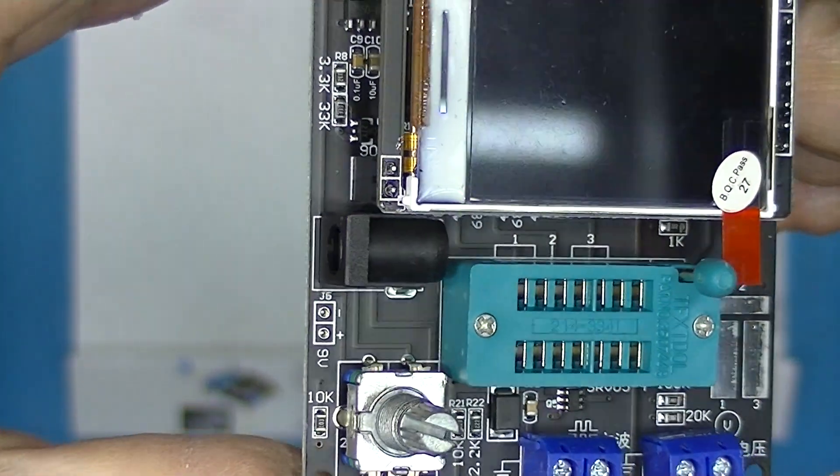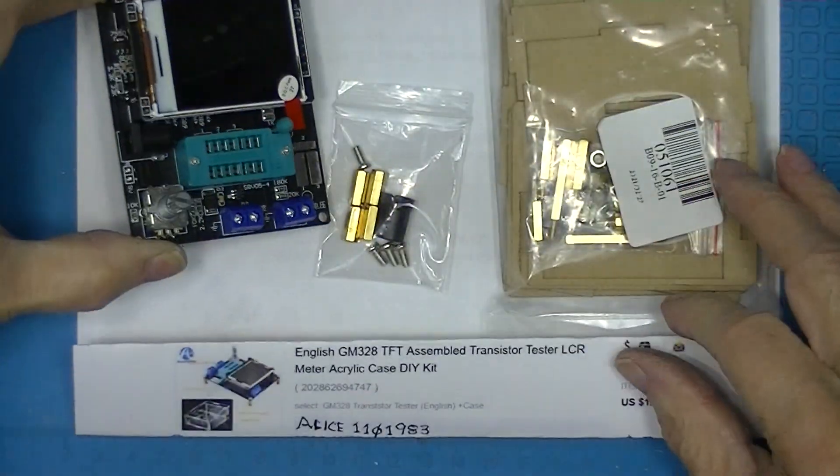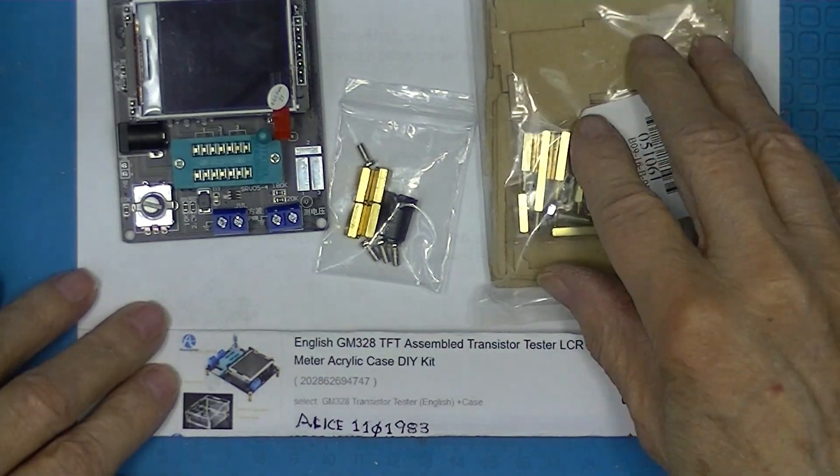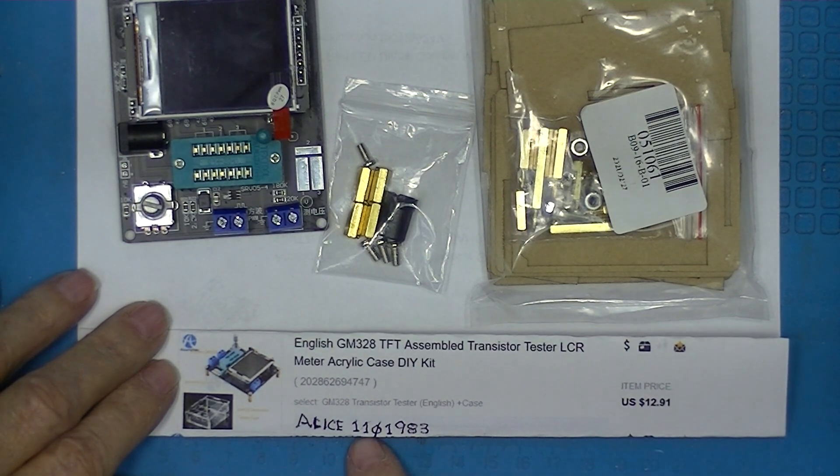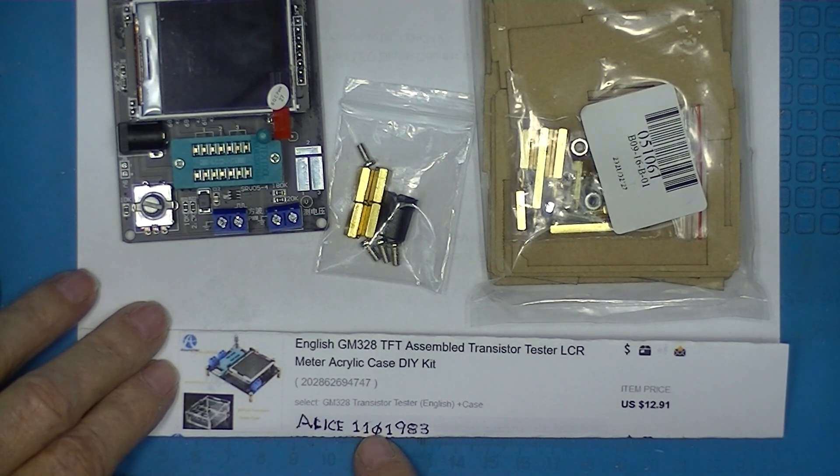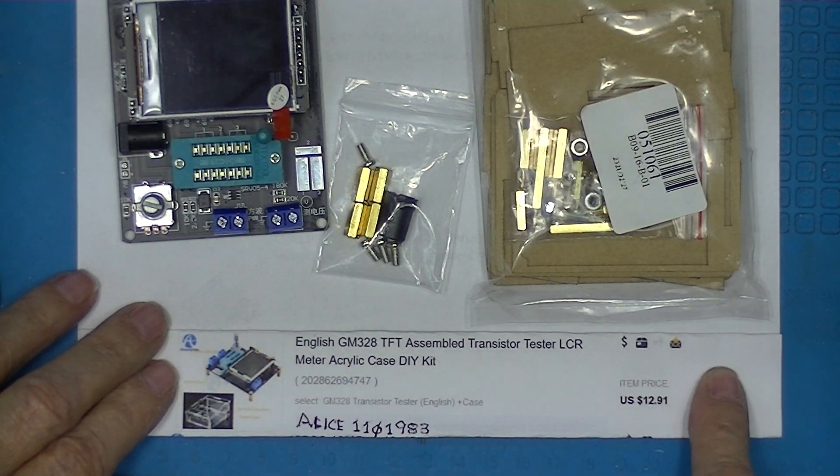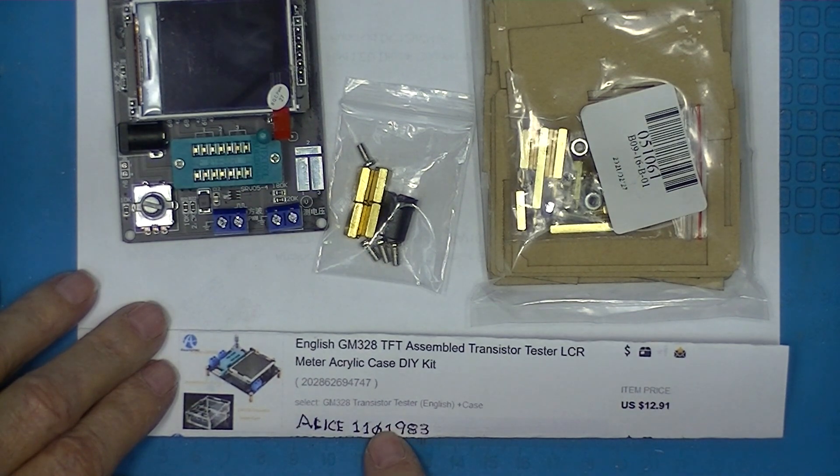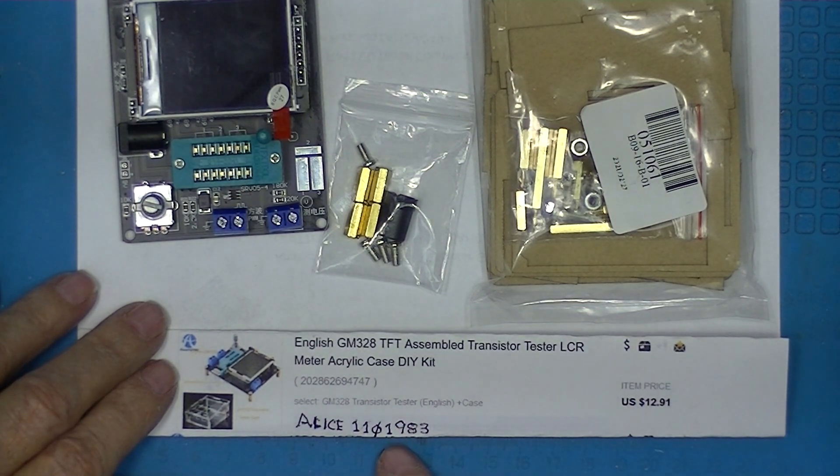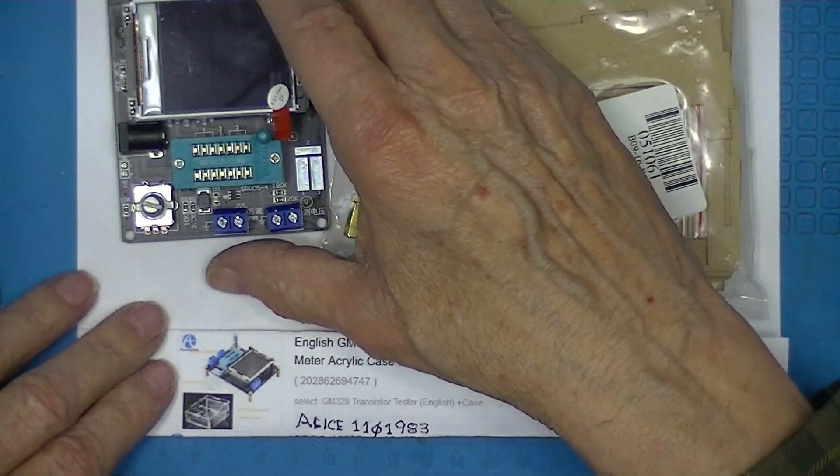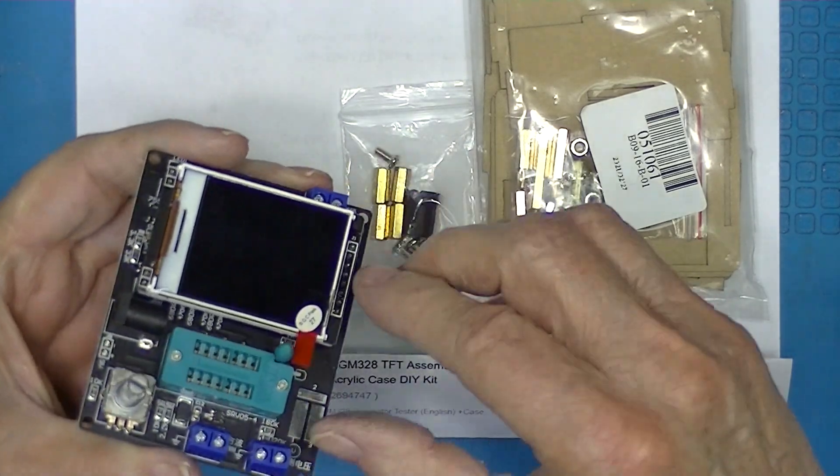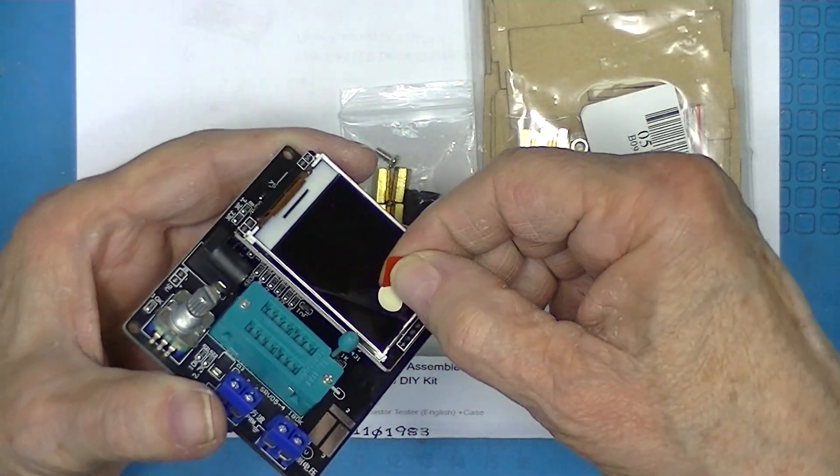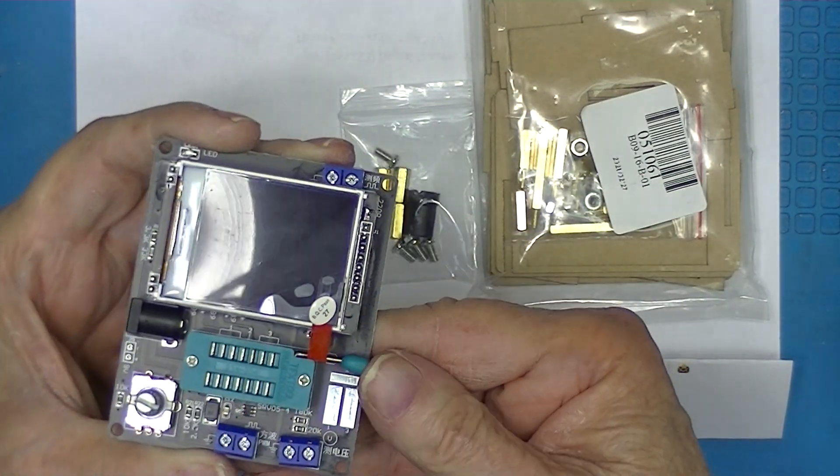It does not come with the nine-volt power supply, but it comes with an acrylic case, all for thirteen dollars. This is from Alice 1101983, an eBay seller. Alice has been around for years. The tester itself is completely pre-assembled, has a little protective coating on the display, and it's got a ZIF socket.